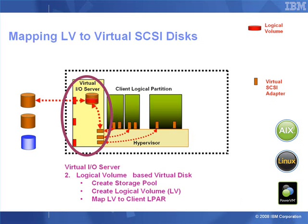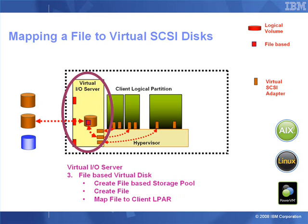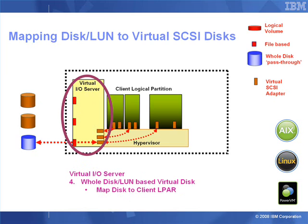For the logical volume based virtual disk, we get the disk online, create a storage pool which is like a volume group, then we can create the logical volume in it and map that to the right SCSI adapter. For the file based virtual disk we do much the same things but we create a file based storage pool, then we create the large file and connect that to the right adapter. And finally when connecting a whole disk or a LUN (if it's a fiber channel disk), this is actually much easier — we just map the disk straight through to the right adapter.